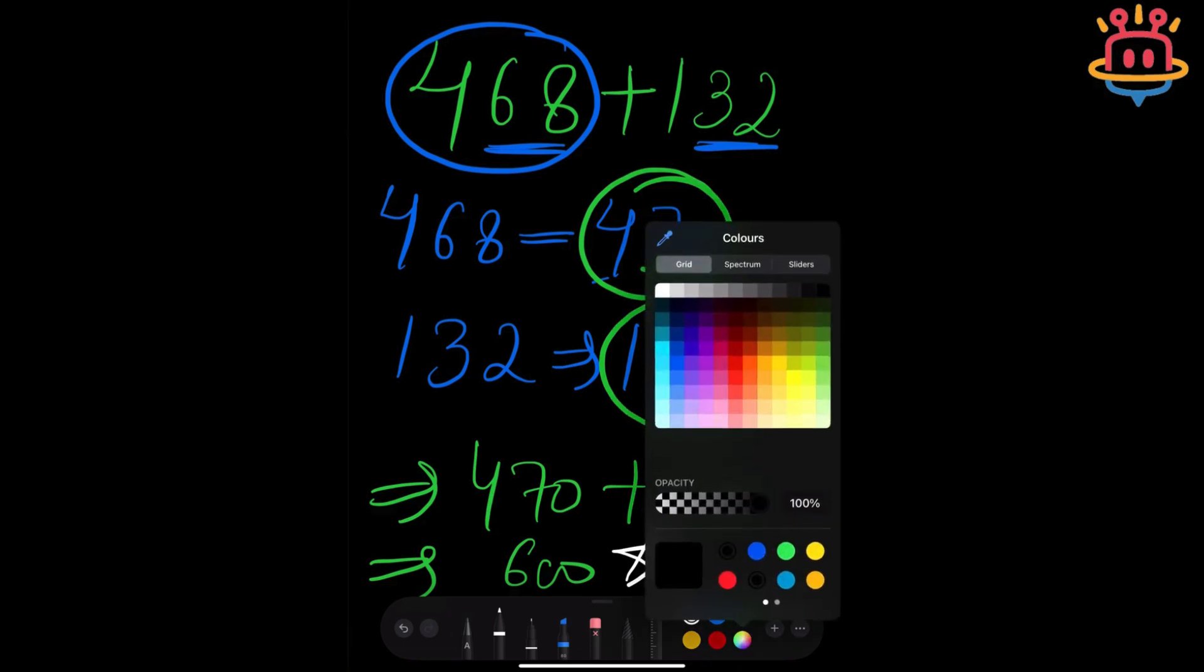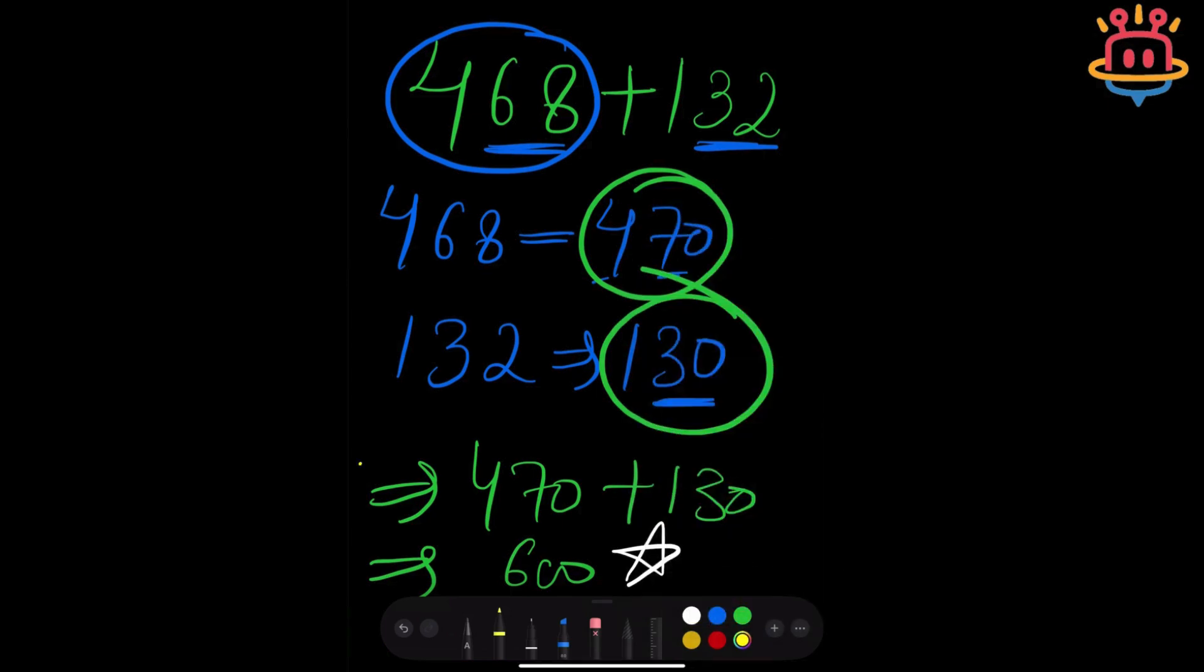The estimation technique helps us make our addition sums much faster. What we generally do in this technique is find the nearest round number to the number given, and then we add both numbers together to get our answer.